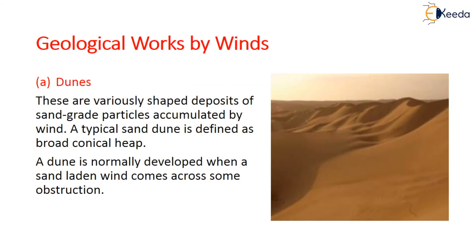Wind also forms sand dunes — these are variously shaped deposits of sand grain particles accumulated by wind at a particular site. A typical sand dune is defined as a broad conical heap. A dune normally develops when a sand-laden wind comes across some obstruction and begins depositing in the form of a cone-like structure.